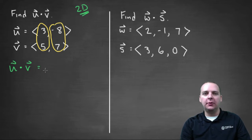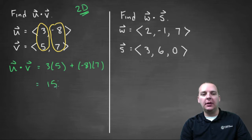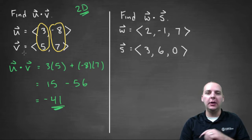So I'll write this out, just mostly for your notes. You'd have 3 times 5, and you'd have -8 times 7, and we're going to take those two products and then add the results together. So that would be 15 minus 56, which would be -41. So that would be the dot product of u and v.